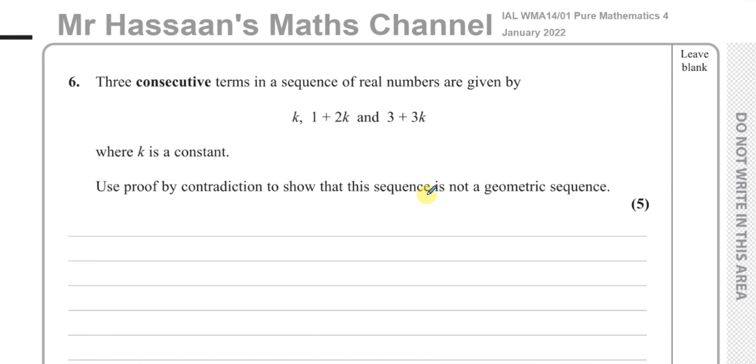Now for question number six from the January 2022 Pure Mathematics P4 International A-Level Edexcel examination. This question here is about proof by contradiction, which is one of the newer topics in the new syllabus of P4 as compared to the old C4.